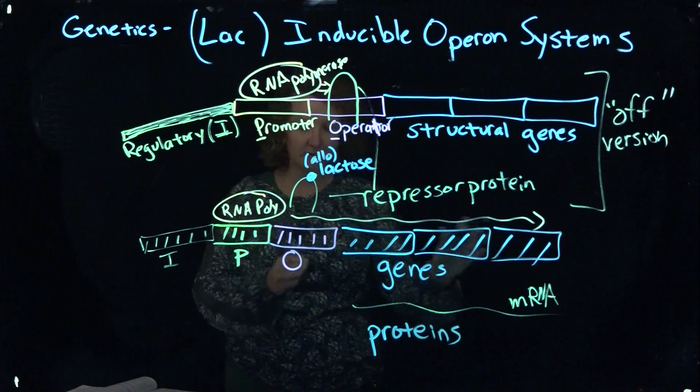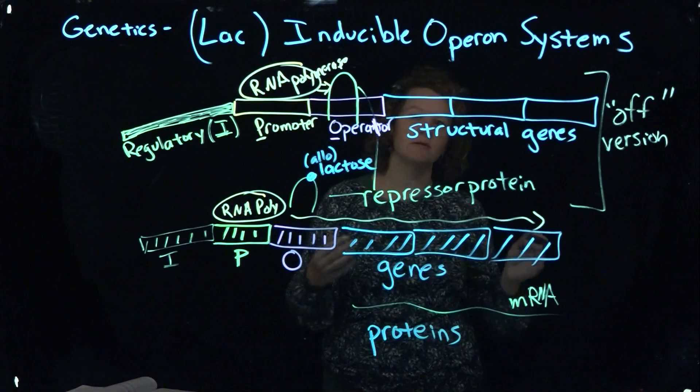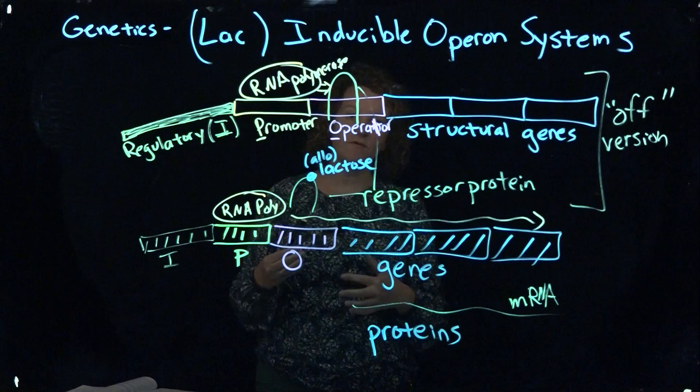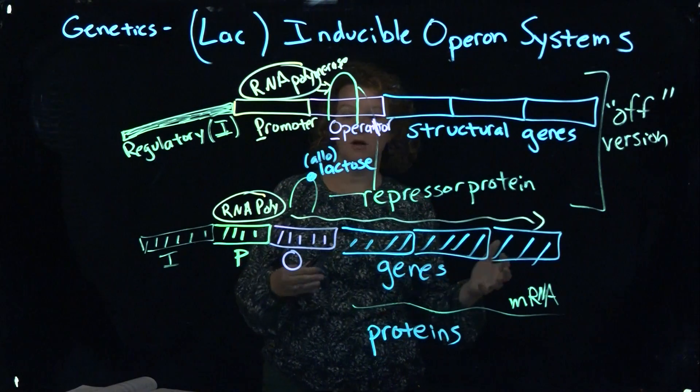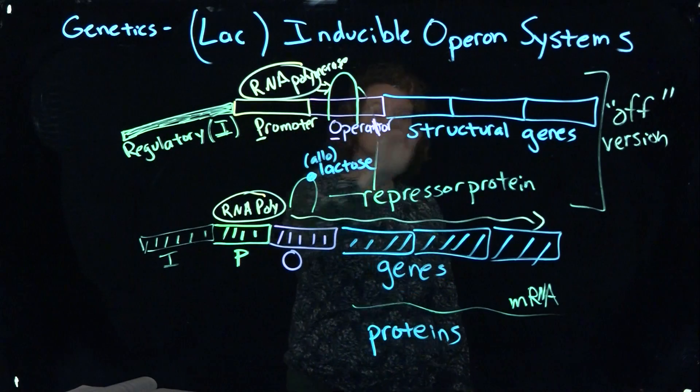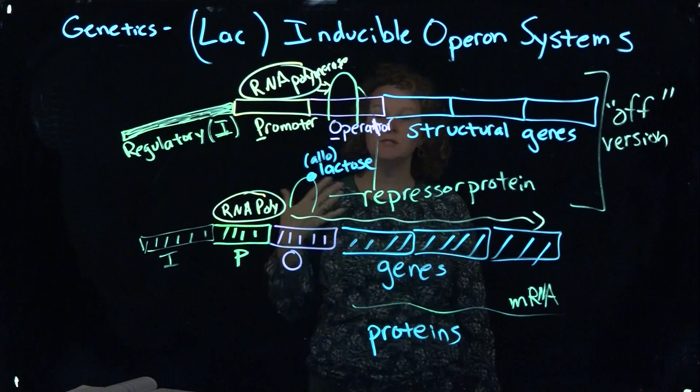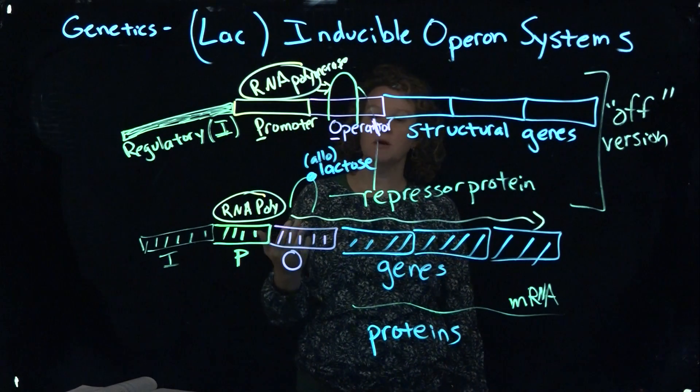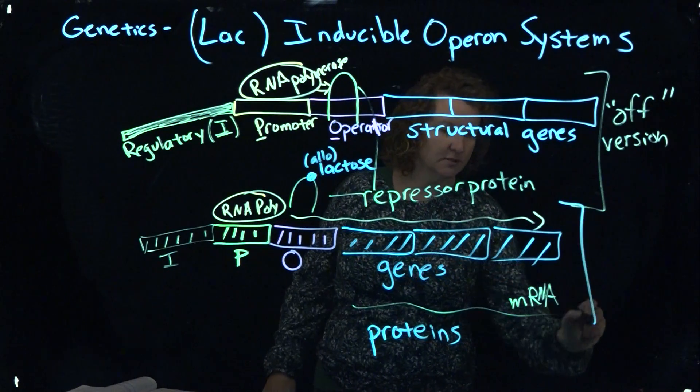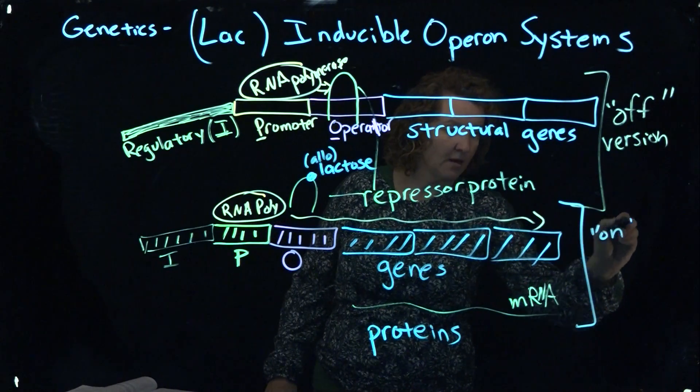And there's a list there that are associated with the lactase system like beta-galactosidase that help enhance either lactose coming over the membrane or breaking down the lactose. So again, just to review, in an inducible system, it's actually typically in the off position. Once that particular substrate becomes available, it will be turned on. So here's our on position, our on version.